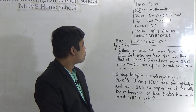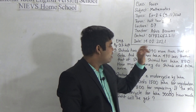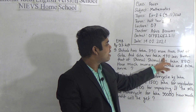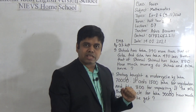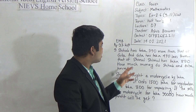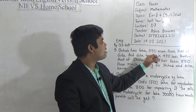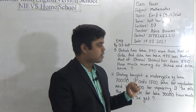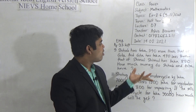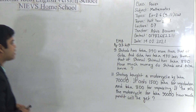From this question, Shimul's amount is taka 890. We find Gita's amount because Gita's amount is 470 taka less than Shimul's, so we subtract 470 from 890 to get Gita's amount. Then from Gita's amount we find Shihab's amount, because Shihab has 390 taka more than Gita — so we add 390 to Gita's amount to get Shihab's amount.